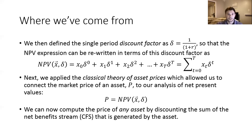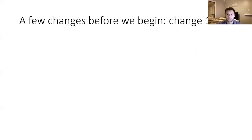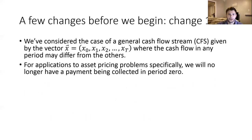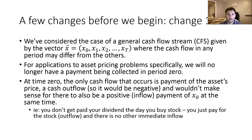Before we specifically look at the uniform annuity flow, we're going to change just two minor things about the framework we've been working in. We've been considering a general cash flow stream where payments start in period zero and end in period T, and those payments can potentially be different. For our applications to asset pricing, the first thing we're going to change is we're no longer going to have that X-zero term showing up. There's going to be no payment in period zero. At time zero, the only cash payment made is the buyer paying a cash outflow equal to the asset's current market price.